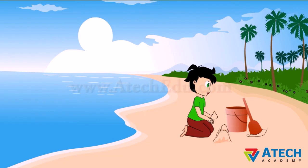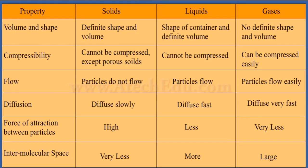Let me summarize the properties of solids, liquids, and gases. Solids: definite shape and volume, cannot be compressed (except porous solids), particles do not flow, diffuse slowly, high force of attraction, very little intermolecular space. Liquids: take the shape of the container, definite volume, cannot be compressed, particles flow and diffuse fast, less force of attraction, more intermolecular space. Gases: no definite shape or volume, highly compressible, particles flow easily and diffuse very fast, very little force of attraction, large intermolecular space.